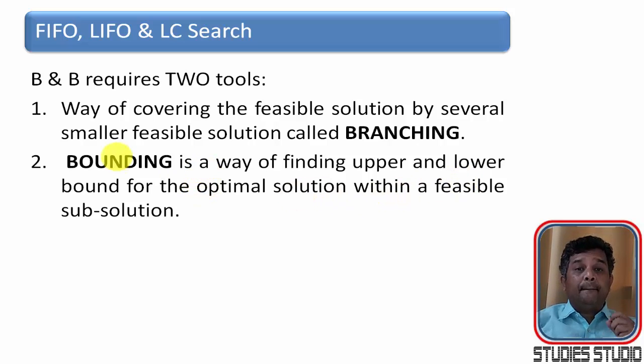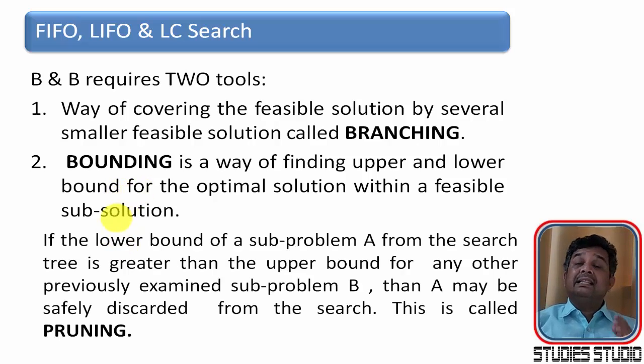It means when we are branching, we are exploring all the solutions. And when we are bounding, we are eliminating the least feasible solutions. Let us say there are two subproblems A and B. If the lower bound of the subproblem A from the search tree is greater than the upper bound for any previously examined subproblem, then A may be safely discarded from the branching. So, this is called pruning.